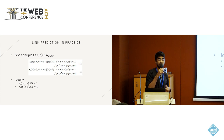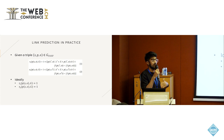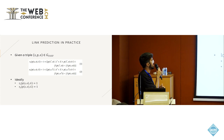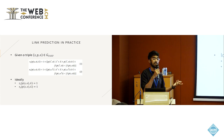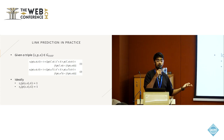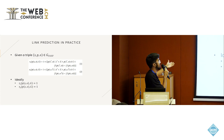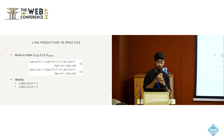In practice, this is not usually the case because knowledge graphs contain a lot of missing information. Link prediction itself is based on the idea that since knowledge graphs are mostly incomplete, there will be many negative triples ranked higher than information we know to be true.